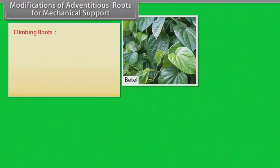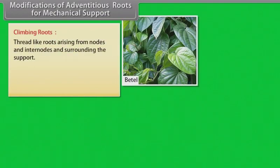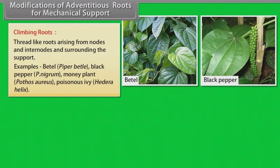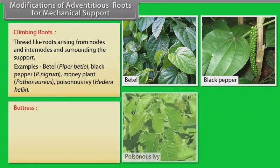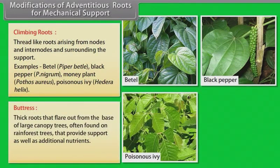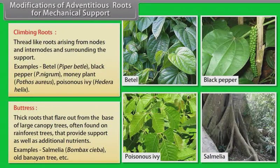Climbing roots: thread-like roots arising from nodes and internodes and surrounding the support. Examples: betel, black pepper, money plant, poisonous ivy. Buttress roots: thick roots that flare out from the base of large canopy trees, often found on rainforest trees, providing support as well as additional nutrients. Examples: Salmalia, old banyan tree, etc.